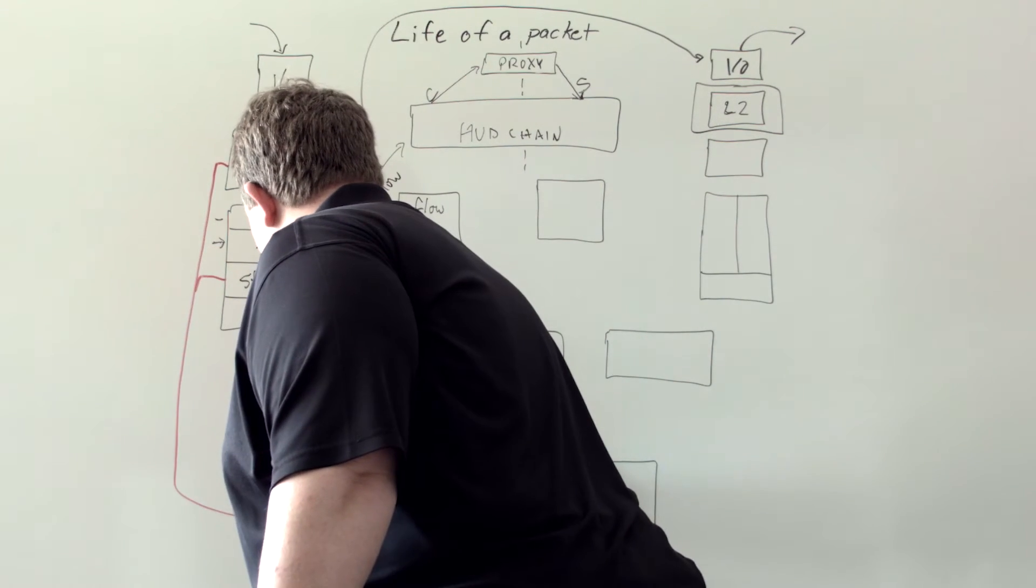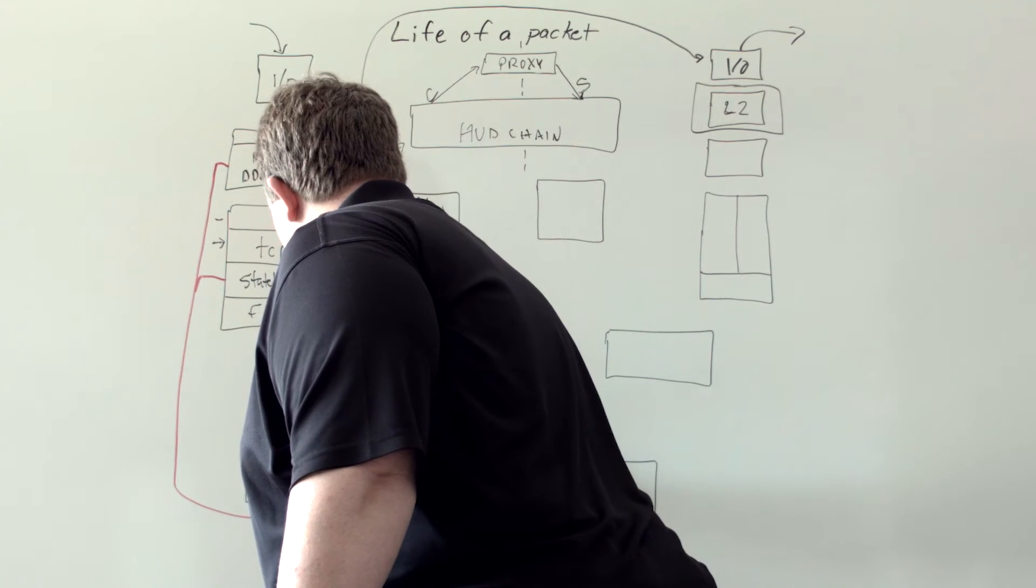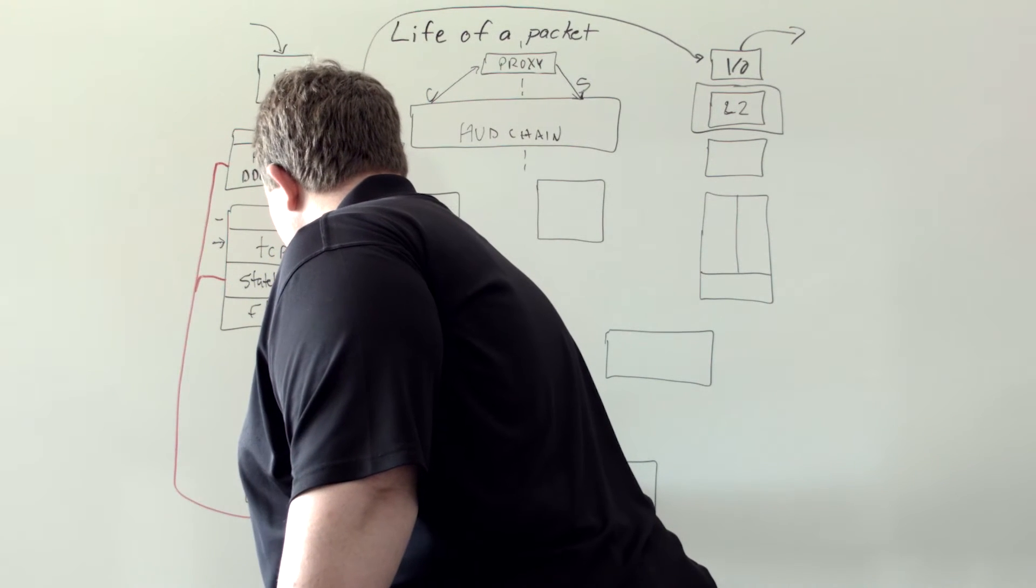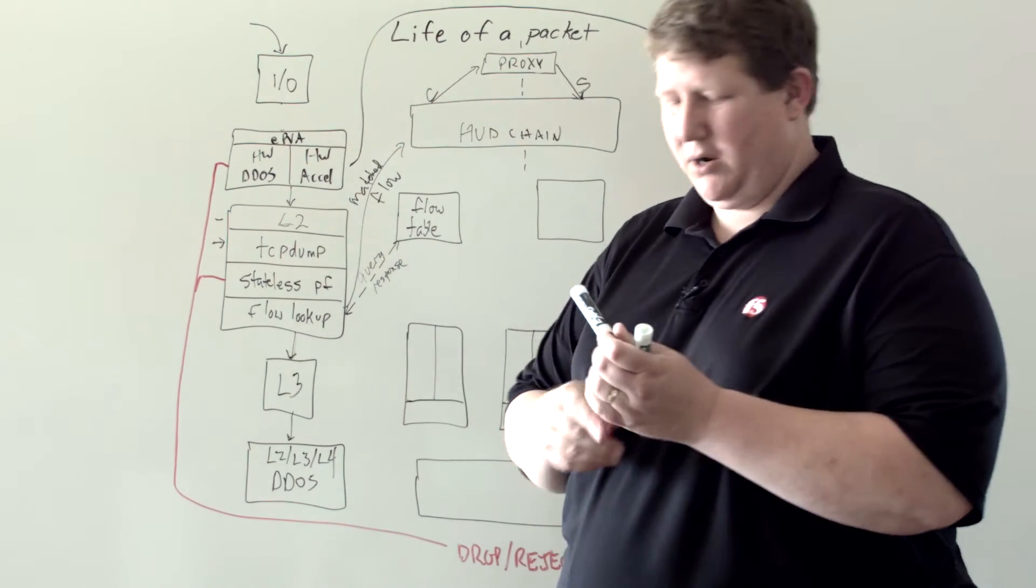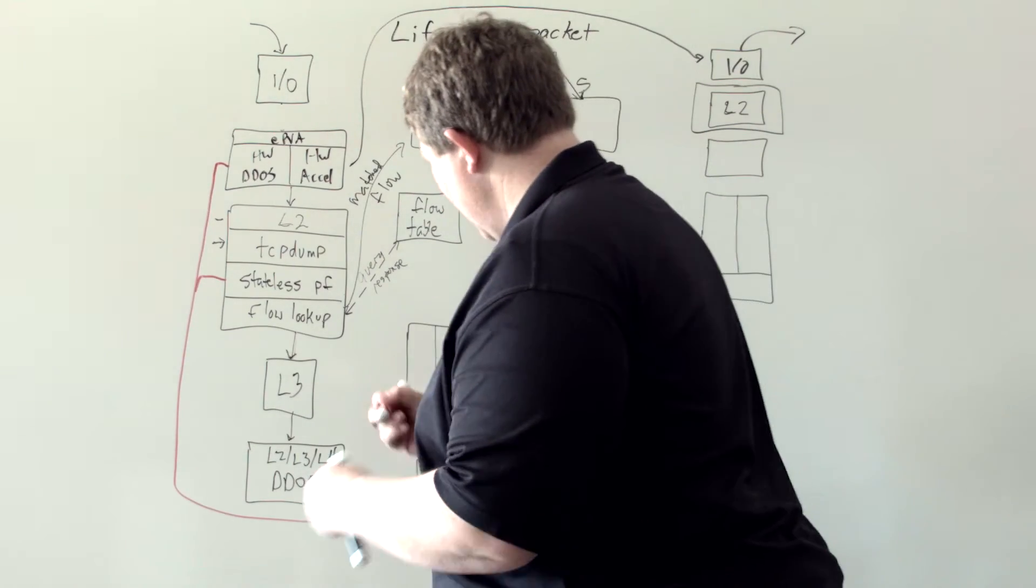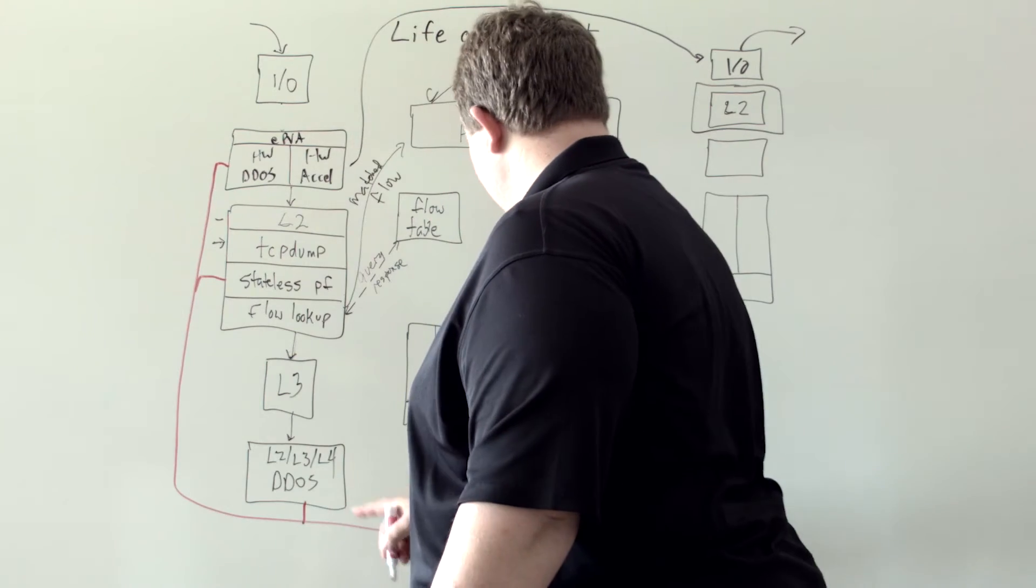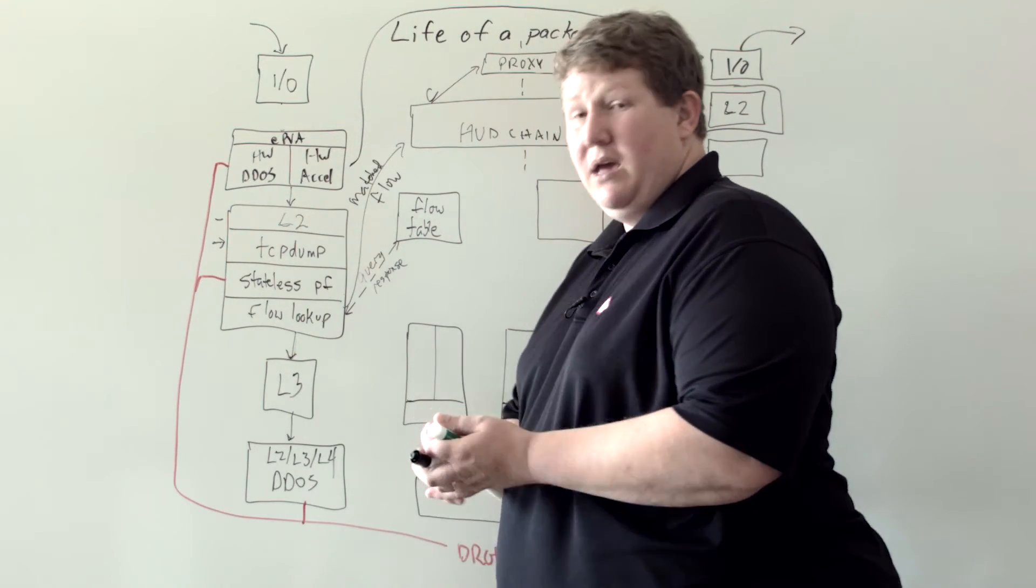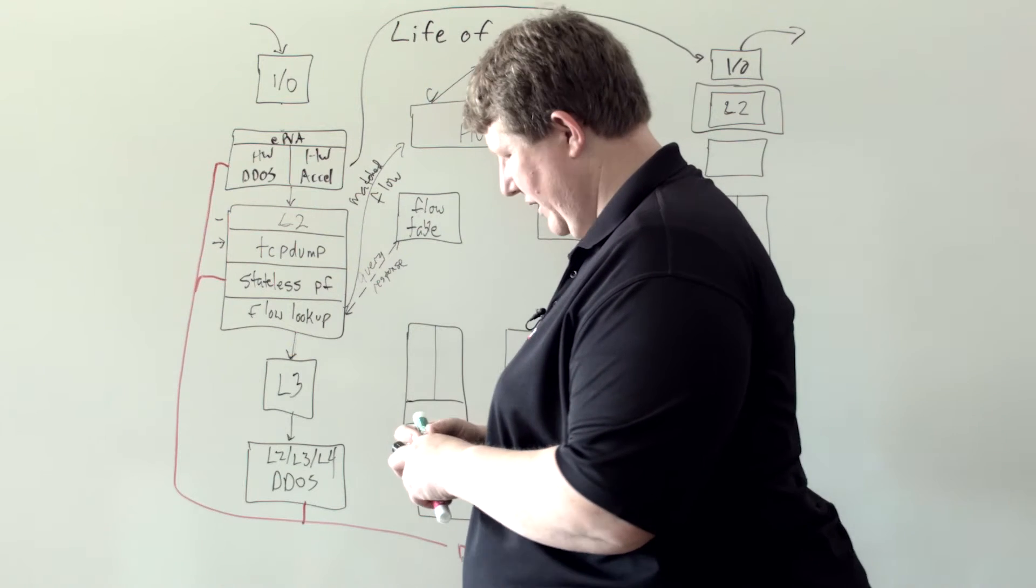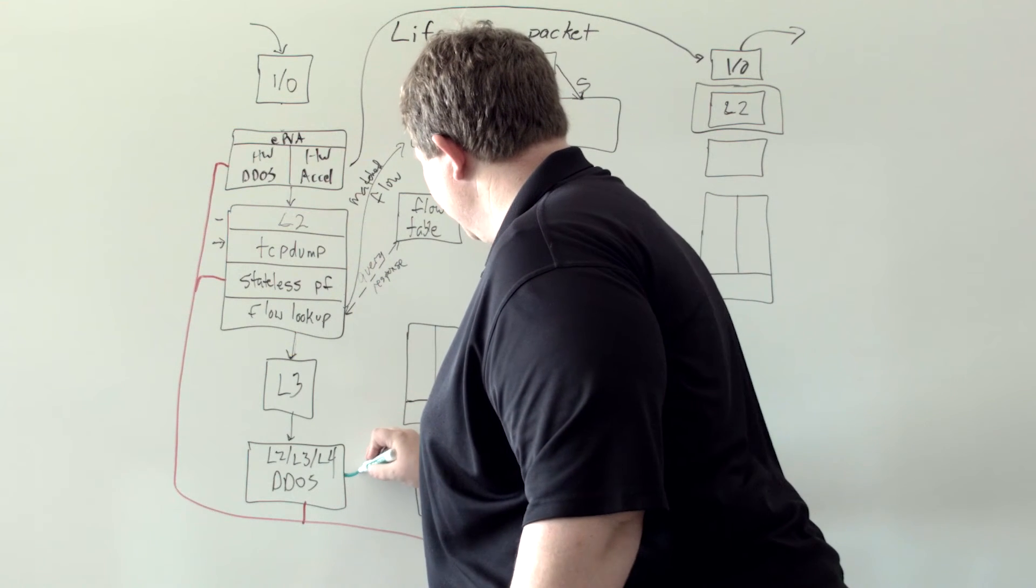Then we're going to drop down to software DDoS. So at L2 through L4, DDoS is occurring here. Of course, if we have something bad happen, it's going to get sent to drop or reject. If it's good, then we're going to come up here to the global context.